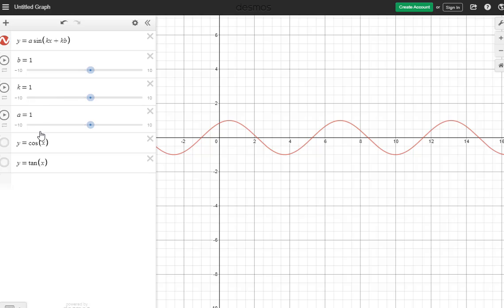Right now these are all set to one. If I move B so that the value of B is positive in the function A sine of Kx plus KB, you can see that positive values of B shift the sine function to the left, and negative values of B shift it to the right.